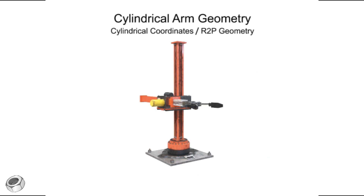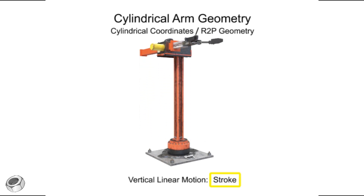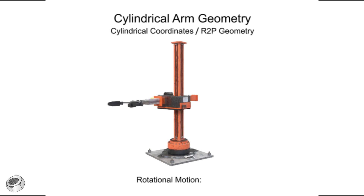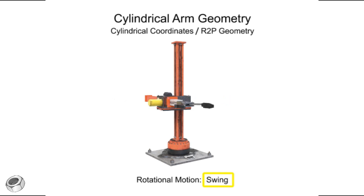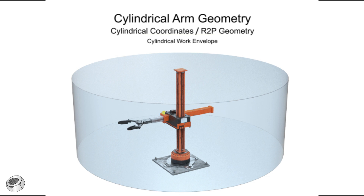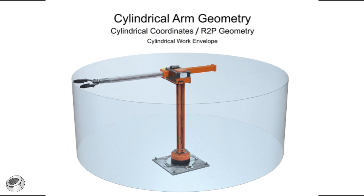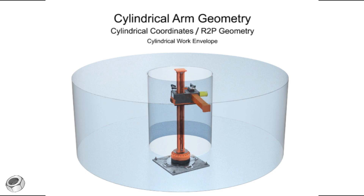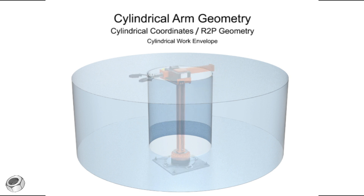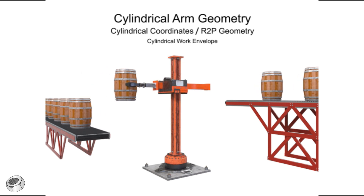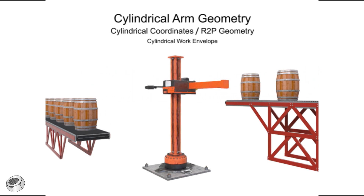Robotic arms with cylindrical geometry move linearly in two directions. Vertical linear motion is called stroke, horizontal linear motion is called stroke, and rotational motion is called swing. Cylindrical geometry robots have a cylindrical work envelope. The advantages of this type of work envelope include a robotic arm reach that is deep at both the top and bottom of the stroke. Additionally, the robot's structure allows for quick movements with high repeatability, a smaller use of floor space, and a larger payload capacity due to structural rigidity.